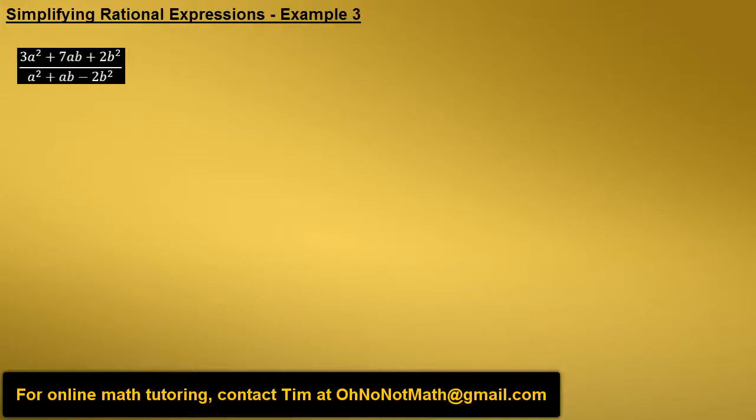Simplify the rational expression 3a squared plus 7ab plus 2b squared all over a squared plus ab minus 2b squared. We're going to simplify this by factoring, so let's start with the numerator.